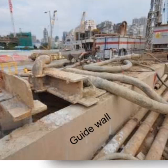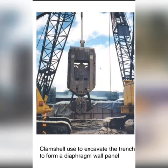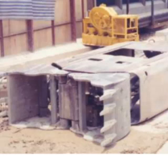Coming to the construction process: the guide wall is present — it consists of two parallel concrete beams constructed along the sides to guide the clamshell. When the excavated soil is soft, a clamshell is used; if hard rock is present, a gravity hammer is used. To keep the side soil from intervening the work and to hold it in position, bentonite slurry is used.